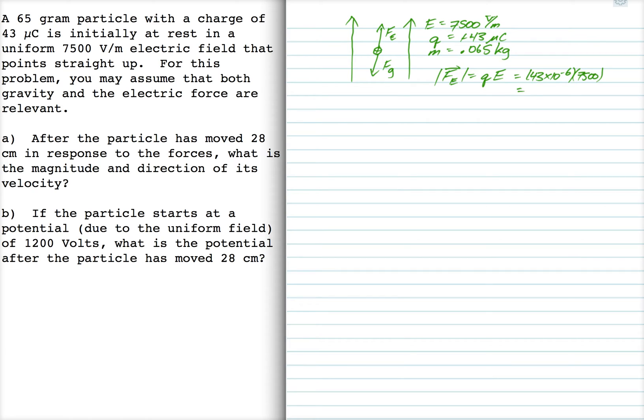So that's 0.3225 newtons, and the magnitude of the gravitational force, mg, is 0.065 times 9.8, which is 0.637 newtons. So it looks like gravitational force wins out, which means that the displacement is going to be down.